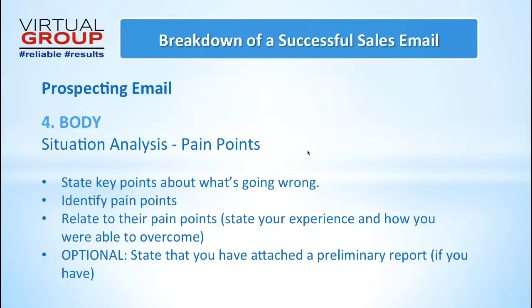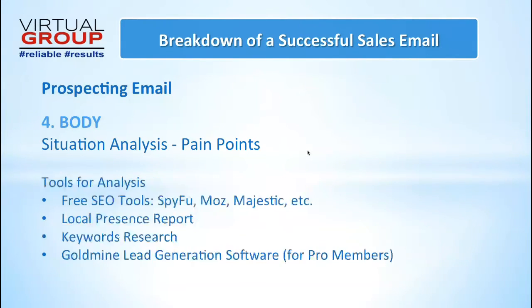You can also give them a report in the email — either attach it or give a link — to show you've done the research. We have tools in our Pro Member backend you can run reports from. You can also use free tools like SpyFu, Moz, and Majestic. You also have the local presence report, can do keyword research, and show where they rank. The Gold Mine lead generation software also surfaces pain points you can bring up.